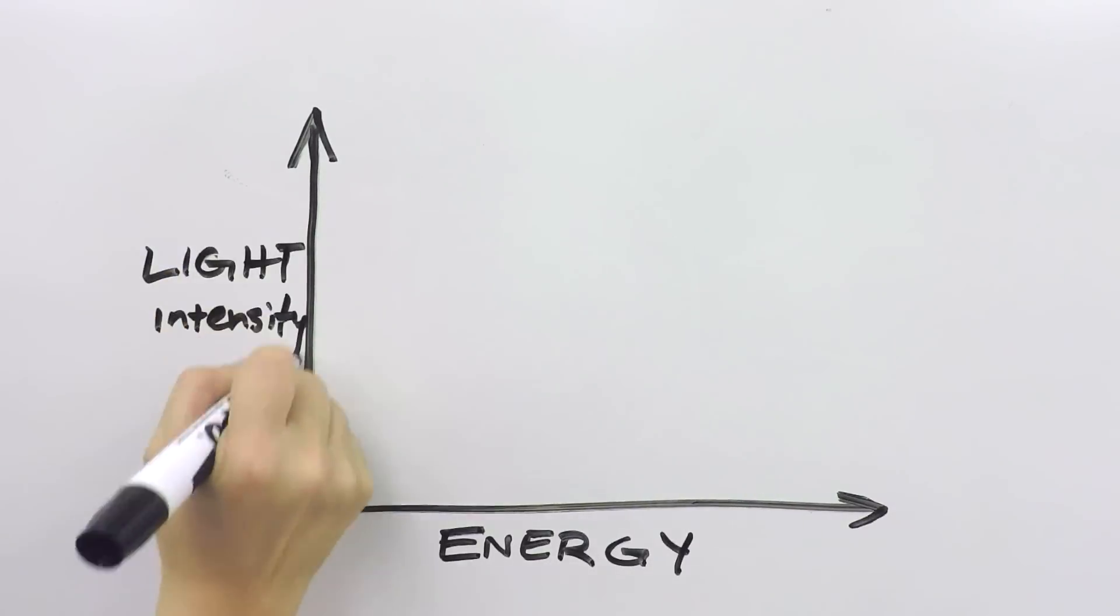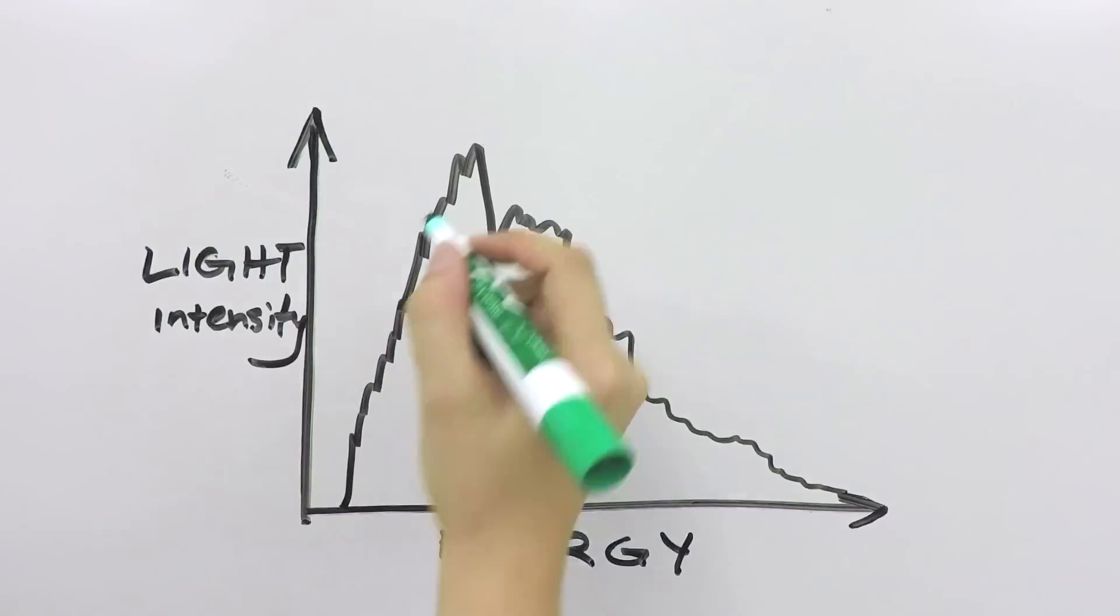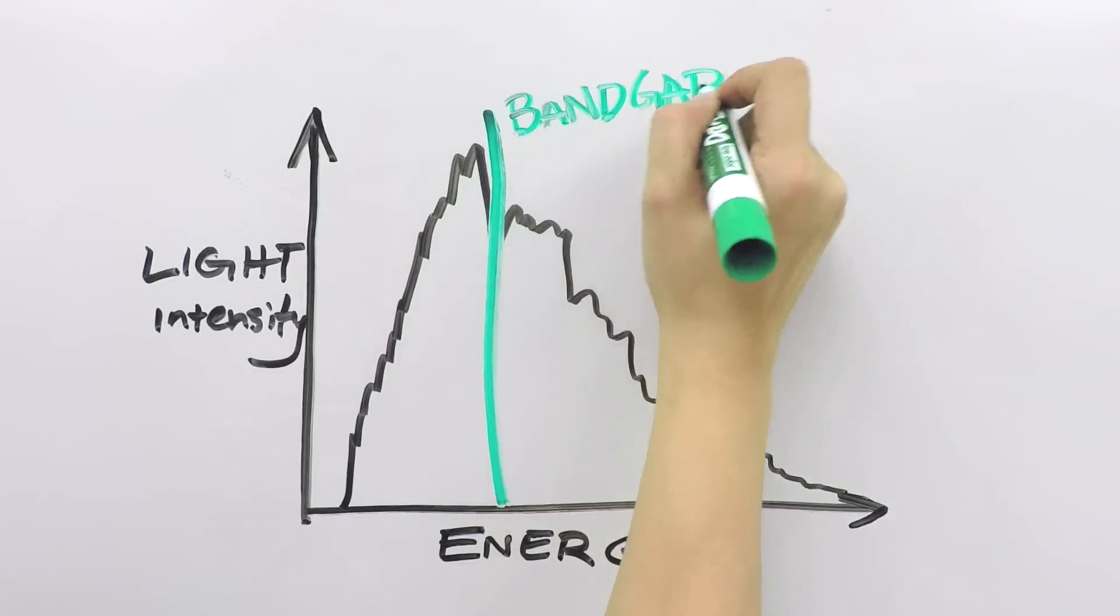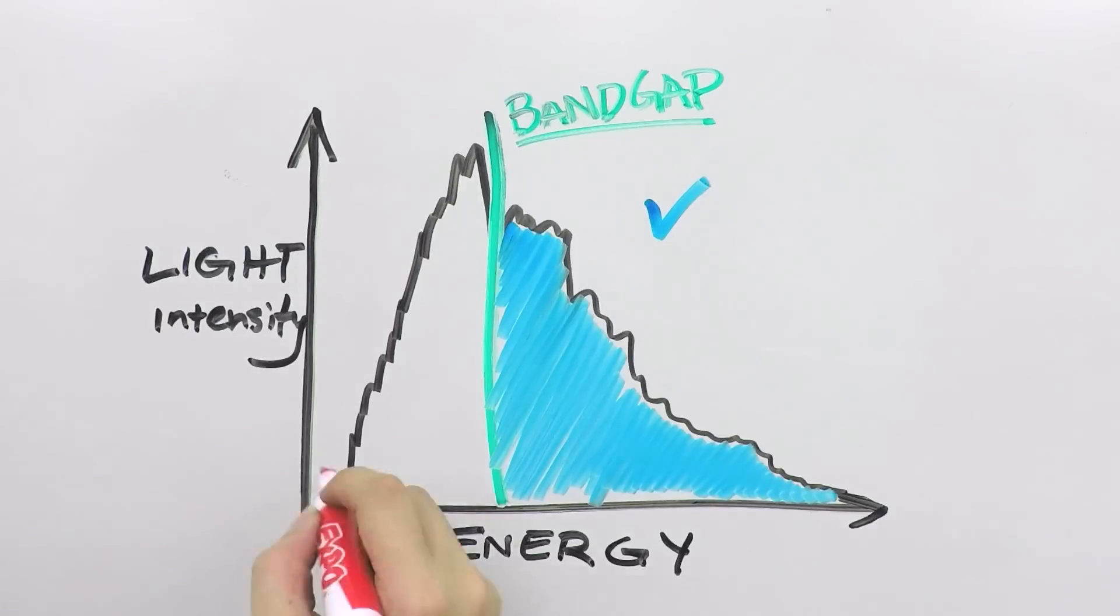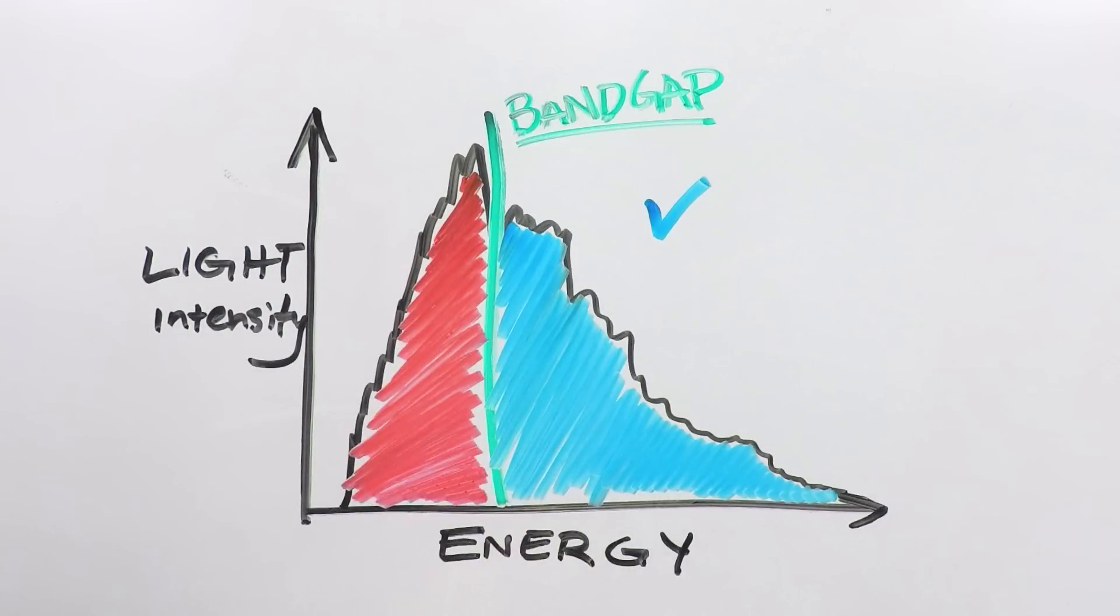Here's a plot of the different energies of sunlight that hit the earth. Solar cells have a threshold energy, which is called the bandgap energy. Sunlight that has energy greater than the bandgap can be converted to electricity. Sunlight that is below this threshold energy, however, cannot be used by the cell.